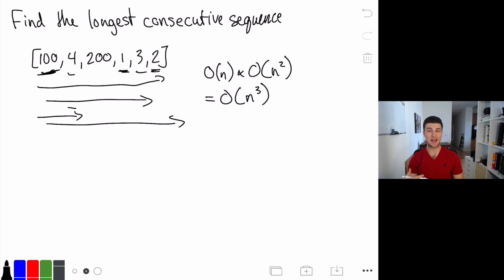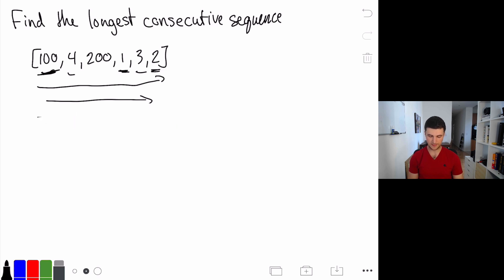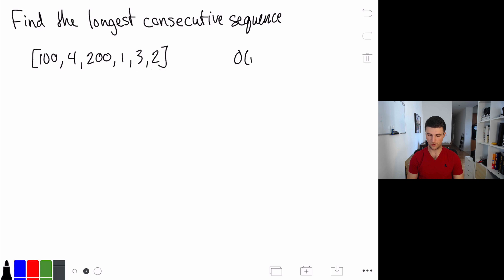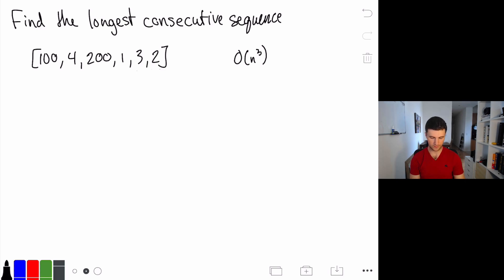This O(n³) is the worst case upper bound — it's not going to be quite that bad in practice, but that's what big O gives us. The question is can we do better? Our best conceivable runtime requires iterating over everything at least once, so we'll never do better than O(n). But can we do better than O(n³)? The input is not sorted — whenever we have unsorted input, a good question to ask is: what if we sorted it, would it make our lives easier?